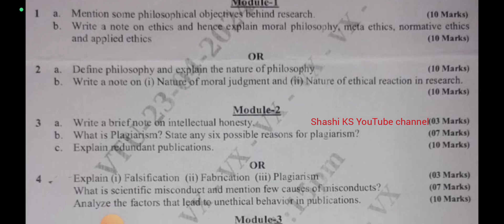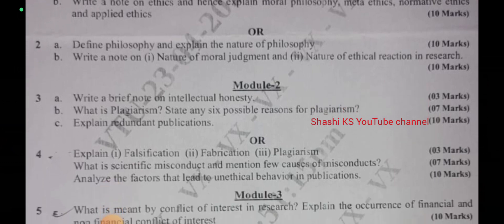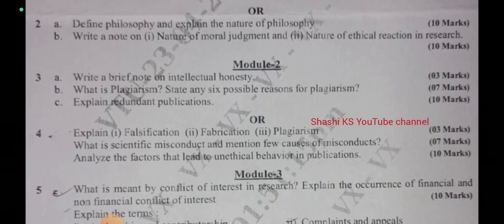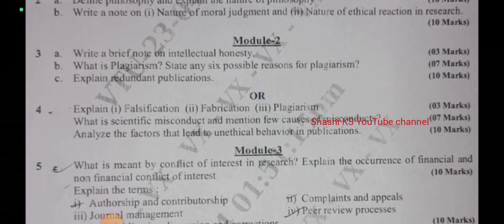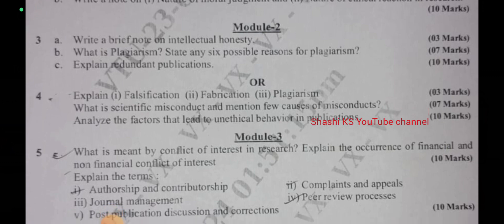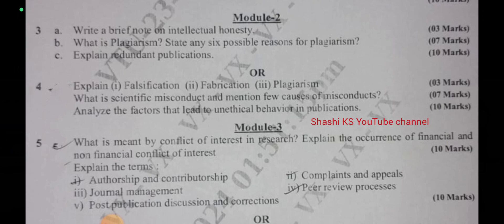In Module 3, question 5a: what is meant by conflict of interest in research? Explain the occurrence of financial and non-financial conflict of interest — asked for 10 marks. Question 5b: explain the terms authorship and contributorship, complaints and appeals, journal management, peer review process, post-publication discussion, and correction — asked for 10 marks.